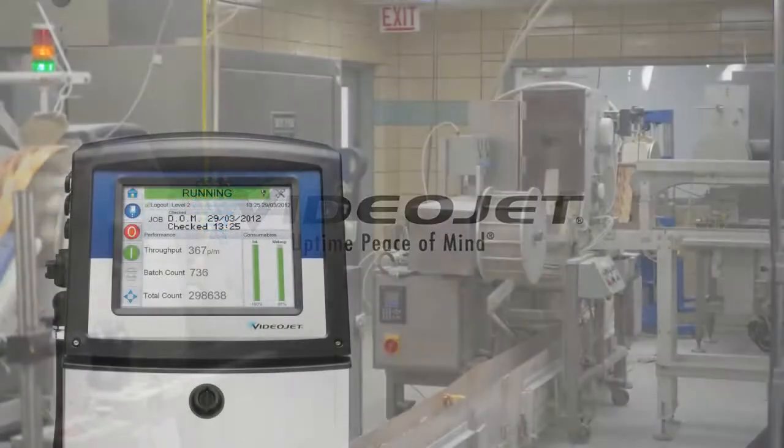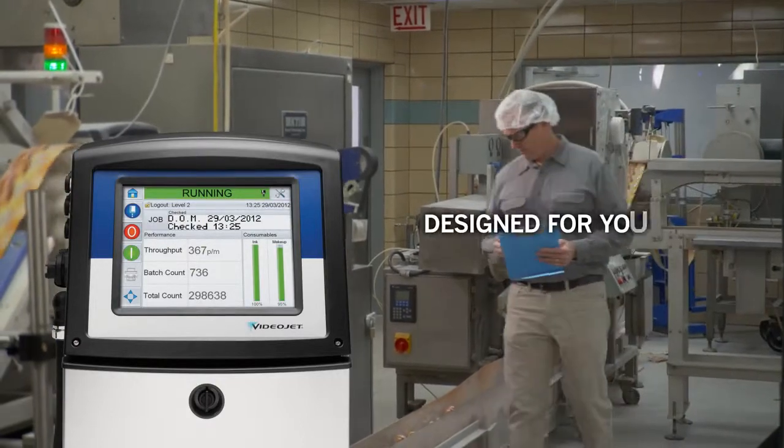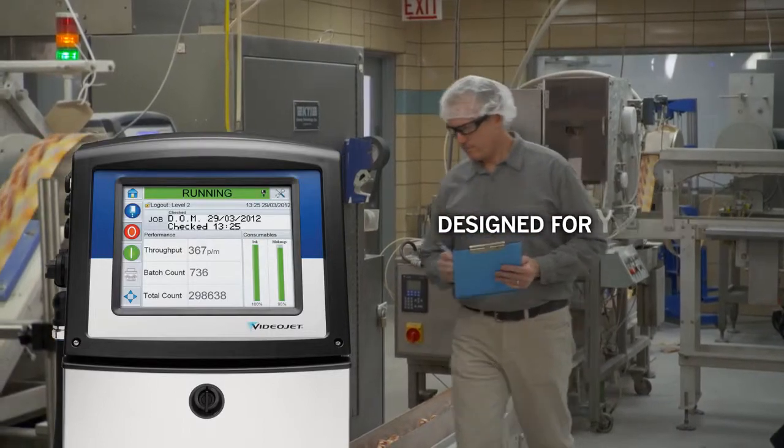The VideoJet 1000 Line Printers with Dynamic Calibration, helping eliminate the biggest obstacles you face in meeting the goals you set for your operation.